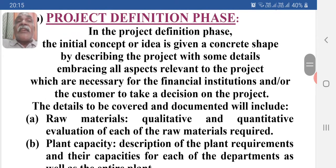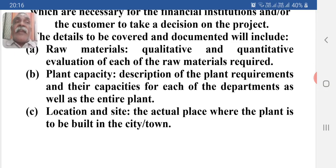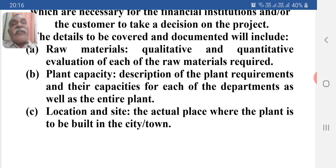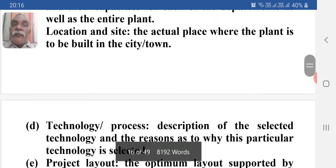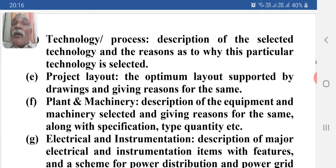In the project definition phase, the initial concept or idea is given a concrete shape by describing the project in some detail, embracing all aspects relevant to the project necessary for financial institutions and customers to take a decision. The details to be covered and documented include: raw material — qualitative and quantitative evaluation of each raw material required; plant capacity — description of plant requirements and their capacity for each department as well as the entire plant; location and site — the actual place where the plant is to be built; and technological process — description of the selected technology and the reason why it was selected.